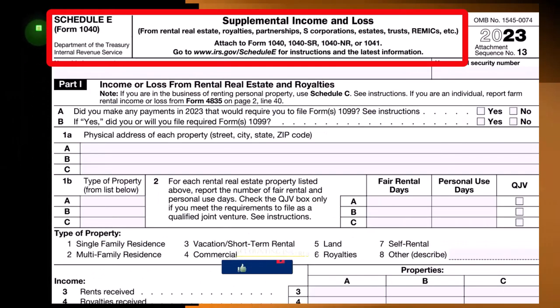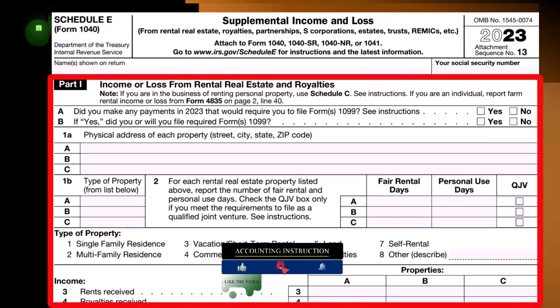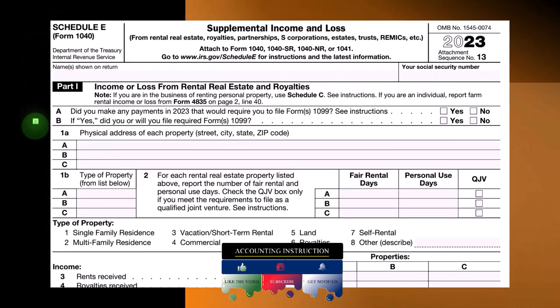We then have Schedule E, supplemental income and loss, which presents an income statement format broken out by property: rental income minus rental expenses.